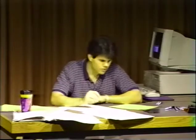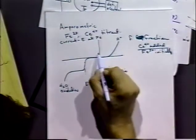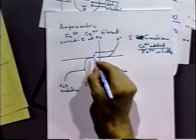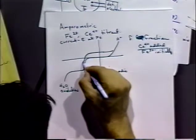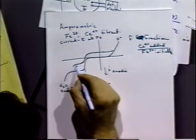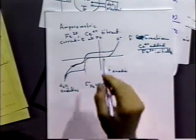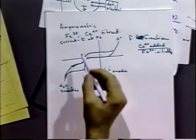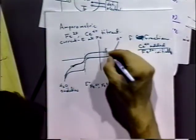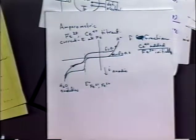After a short period of time, let's say F equals 0.5. Because of the system, we've now generated some iron(III), so the curves look a little different. The equilibrium potential at the zero point would reflect the fact that there's some iron(II) and some iron(III) in solution — half and half, in fact.